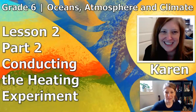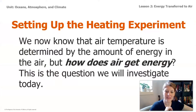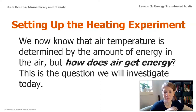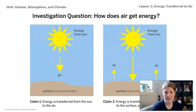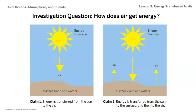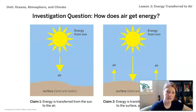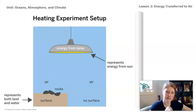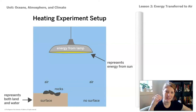This is lesson two, part two — conducting the experiment. We already talked about the investigation question: how does air get energy? When we ask how air gets energy, what we're really asking about is energy transfer — we want to know how the energy is transferred to the air. We have claim one, which says energy is transferred from the sun to the air, and claim two, which says energy is transferred from the sun to the surface and then from the surface to the air. Because this is a model, each part of the experiment represents something else.